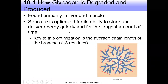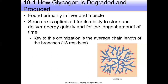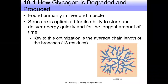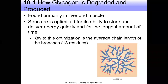When we digest a meal high in carbohydrates, we have a supply of glucose that exceeds our needs, so we store glucose as a polymer called glycogen. Glycogen is similar to the starches found in plants — that's why it's sometimes called animal starch. In the degradation of glycogen, several glucose molecule residues can be released at the same time, one from each end of a branch, rather than one at a time, as would be the case in a linear polymer.